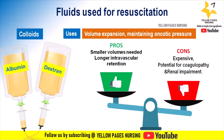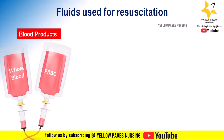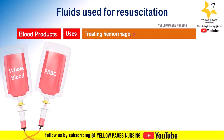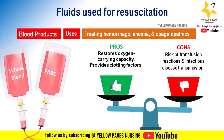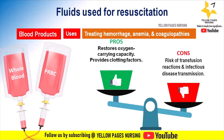Blood products include whole blood, packed red blood cells, plasma, and platelets. Their main use is treating severe hemorrhage, anemia, and coagulopathies. Advantages include restoring oxygen-carrying capacity and providing clotting factors. Disadvantages include the risk of transfusion reactions and potential for infectious disease transmission such as HIV and hepatitis.